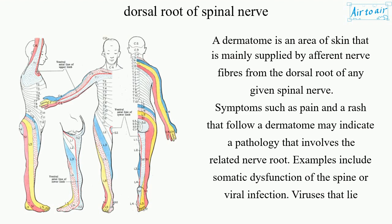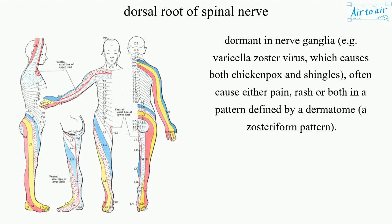Viruses that lie dormant in nerve ganglia, e.g. varicella zoster virus, which causes both chickenpox and shingles, often cause either pain, rash, or both in a pattern defined by a dermatome, a zosteriform pattern.